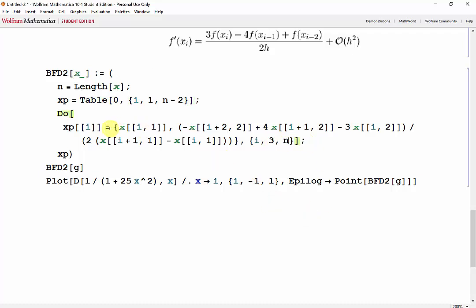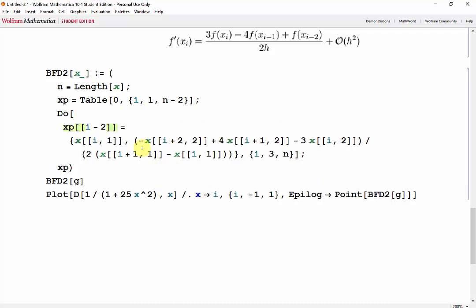And now i will go from 3 all the way to n, meaning that we need to change xp to have an index of i minus 2. And now changing the equation, we have a positive f of x_{i-2}, a negative 4 f of x_{i-1}, and a positive 3f of x_i. Then we'll change our step size, positive x of i, and minus x of i minus 1.